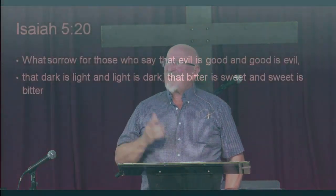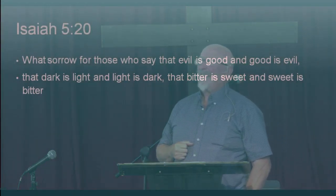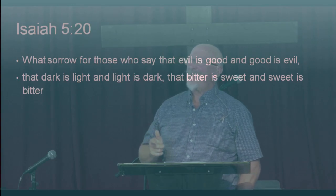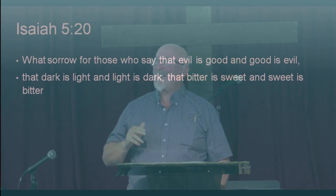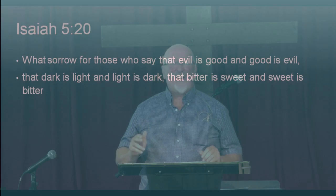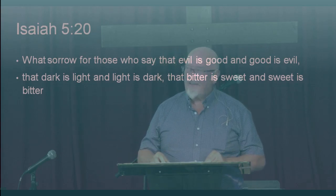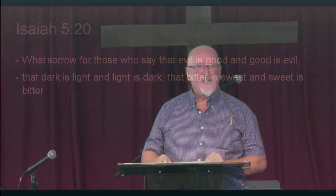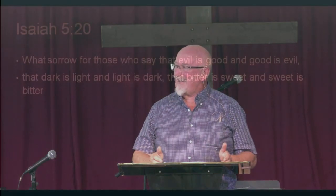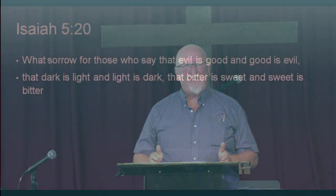One of the things that stuck out in my mind is this passage from Isaiah 5:20: 'What sorrow for those who say that evil is good and good is evil, that dark is light and light is dark, that bitter is sweet and sweet is bitter.' Here's a prophet speaking to the Jews 700 years before Christ, approximately 3,000 years ago, and he says: 'Woe to those who call evil good and good evil, substitute light for darkness and darkness for light, sweetness for bitter and bitter for sweet.'